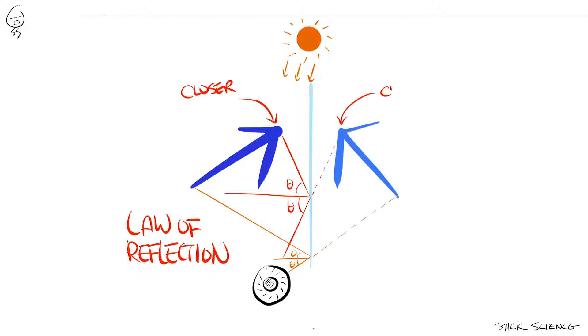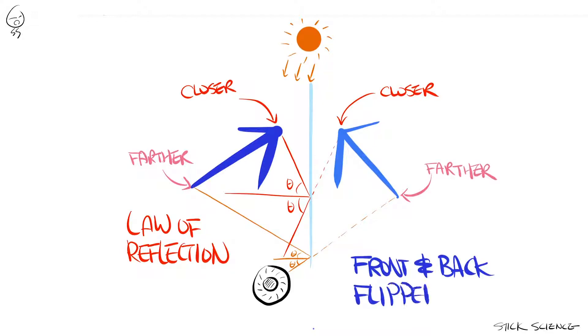Basically, if something is closer to the surface of the mirror, its mirrored image will also be closer to the surface of the mirror, hence the front and back flipping.